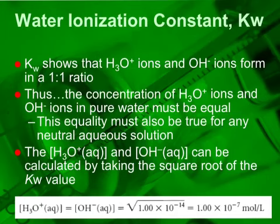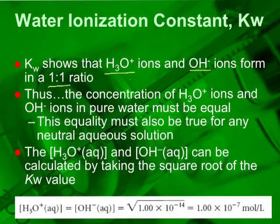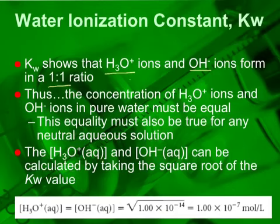That ionization equation tells us that when two molecules of water ionize, you produce one molecule of hydronium and one molecule of hydroxide in a one-to-one ratio. That is, the concentration of hydronium equals the concentration of hydroxide, which means the water will be of neutral pH. We can determine each concentration by taking the square root of kW, giving 1×10⁻⁷ moles per liter.